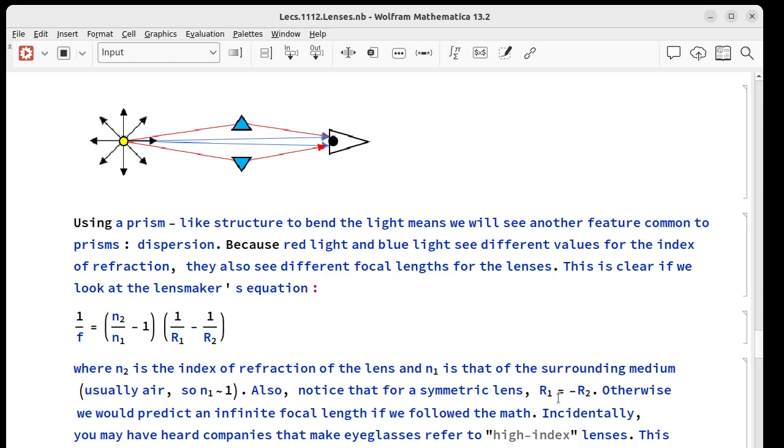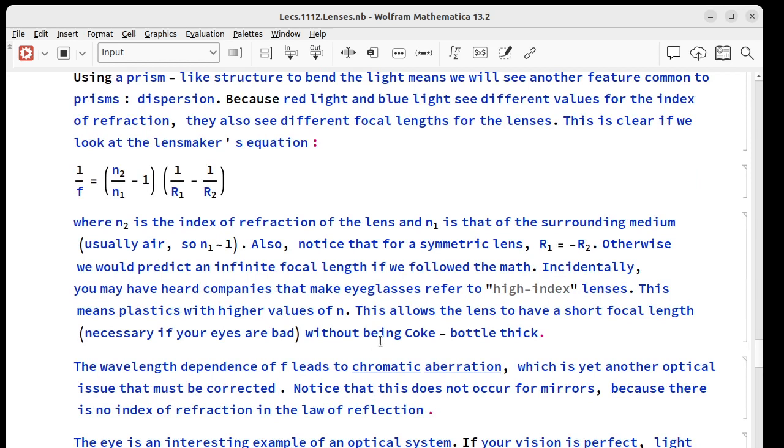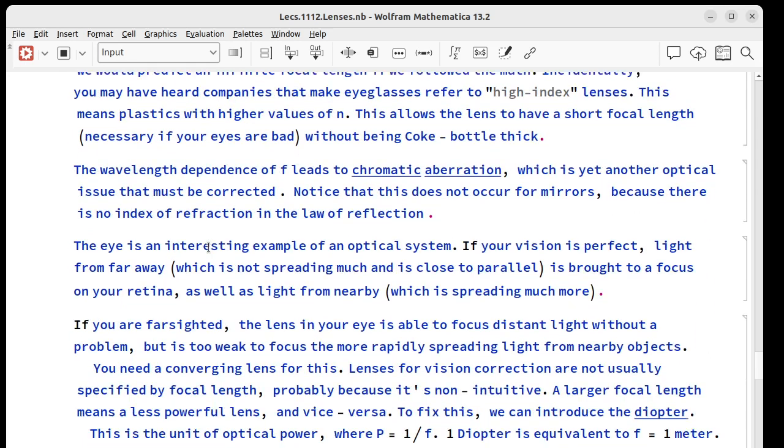Keep in mind for a symmetric lens, R1 and R2 are the negative of each other. If they were equal to each other, we'd get zero here. That wouldn't make any sense. But what that means is, let's say R1 is the curve this way, and then R2 is the curve this way. One of them is the negative of the other. You may also have heard companies that make glasses talk about high index lenses. What they mean here is plastics with higher values of N. What that can do, if you have a high enough value of N, you don't need to have Coke bottle thick lenses, even if your eyes are bad. They can be thin, just made out of this fancier plastic.